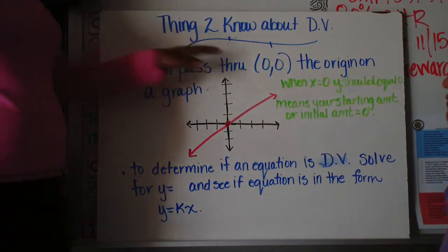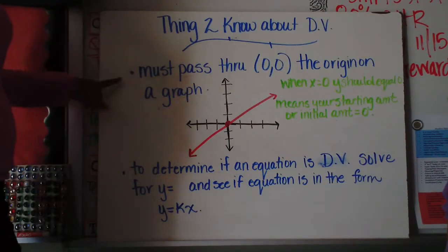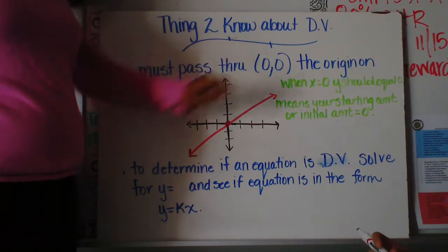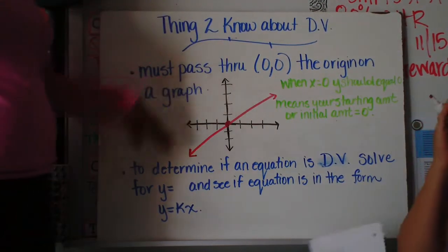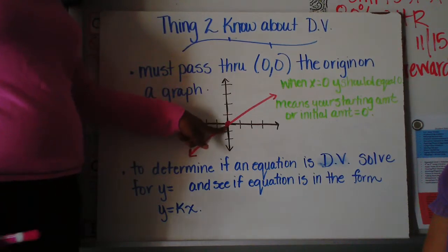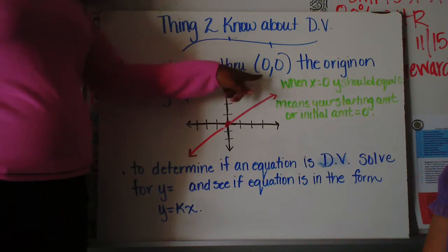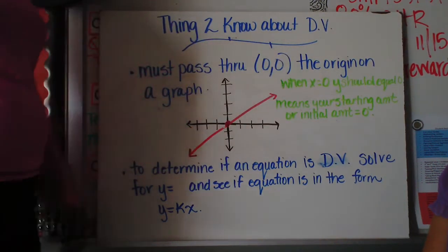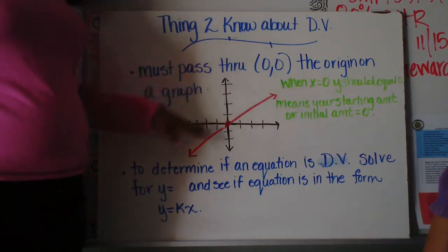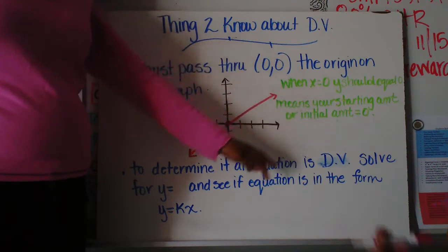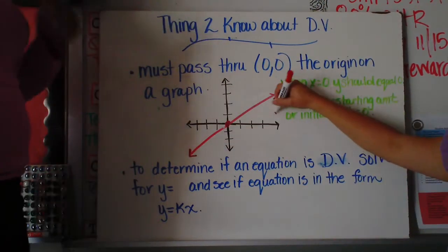Alright, so things to know about direct variation. First of all, direct variation must pass through the origin, which is the coordinate (0,0). So if you see it on a graph, your graph always has to go through your origin or the middle. Because we know it passes through (0,0), this is when x equals 0, my y value should also equal 0, which means graphically, if we're interpreting our graph, that my starting amount or my initial amount is equal to 0.